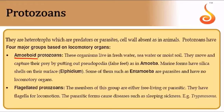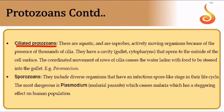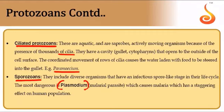Protozoa under kingdom Protista are classified by locomotory appendages: amoeboid protozoans (e.g., free-living Amoeba, parasitic Entamoeba, aquatic Arcella with silica shell); flagellated protozoans with whip-like flagella (e.g., parasitic Trypanosoma); ciliated protozoans with fine hair-like cilia (e.g., Paramecium); and sporozoans, which have no specific locomotory structures. The most common sporozoan is Plasmodium, which causes malaria in humans using female Anopheles as its vector.